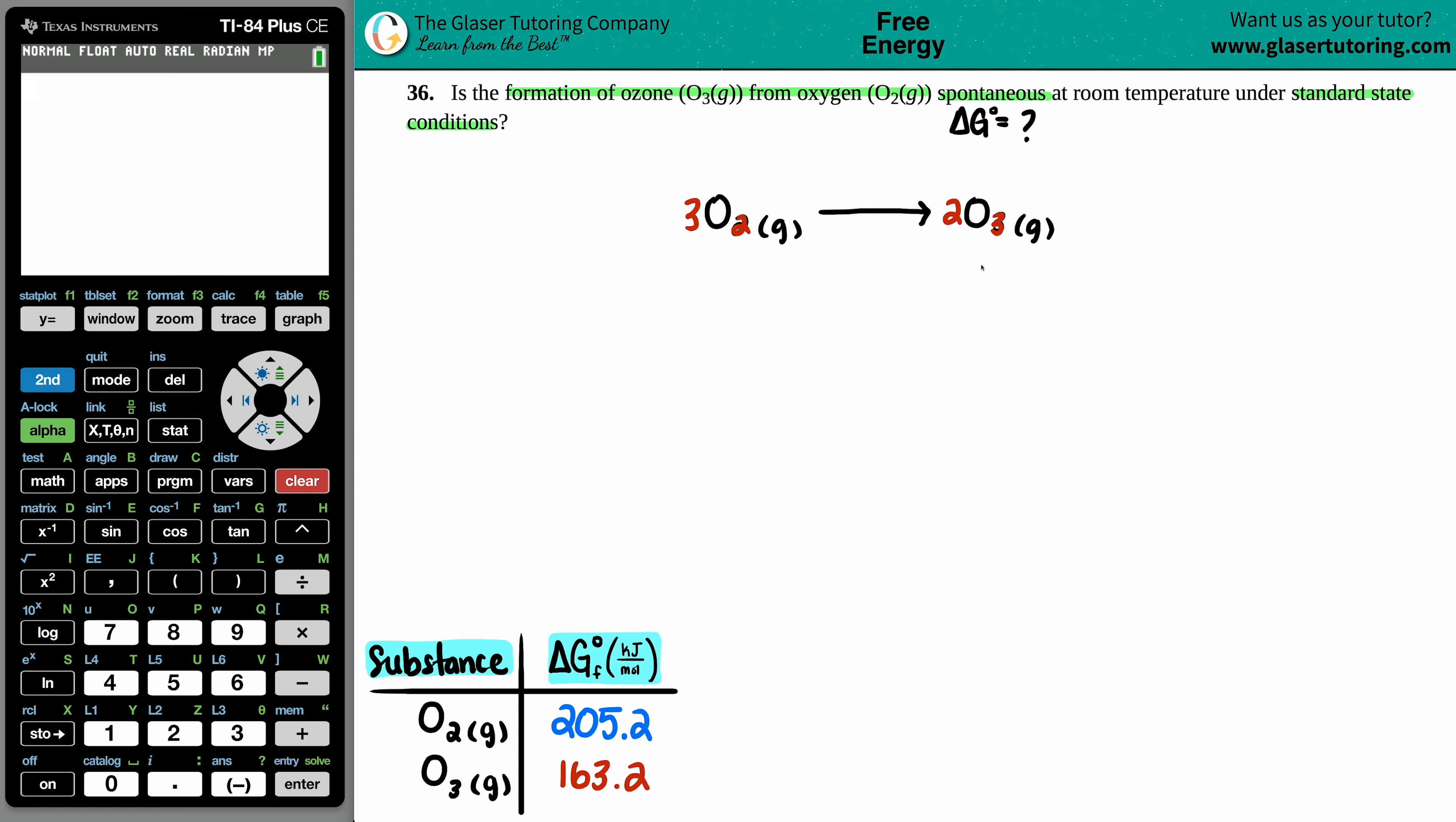And if we're using standard state conditions, that means that I can go in the back of the textbook to find out what those delta G values are for each individual component. And that's exactly what I did. So let's just drag these up. The delta G value for the O2 is 205.2, and the delta G value for the O3 is 163.2.